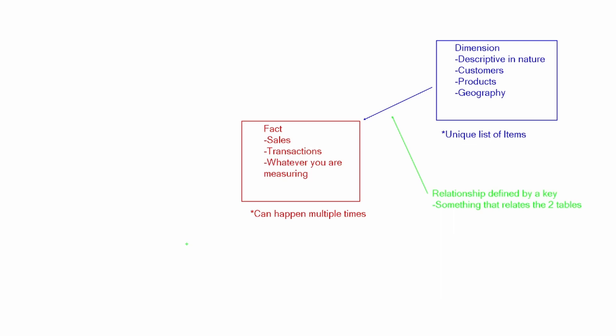When talking about the difference between a dimension table and a fact table, we have to understand that a dimension table is descriptive in nature — it's a unique list of items. As you can see here in blue, the dimension table contains a unique list of customers, products, or geography locations that we relate to our fact table. The ideal relationship between a dimension table and a fact table in Power BI is a one-to-many, where the dimension side is the one side.